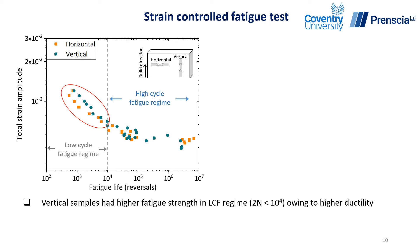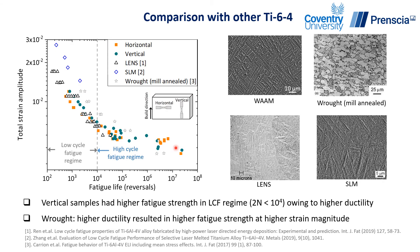This slide presents the total strain amplitude versus fatigue life in reversals for horizontal and vertical samples, with the low cycle fatigue regime and high cycle fatigue regime highlighted. When we compare horizontal and vertical samples, we can observe that the vertical samples show marginally higher fatigue performance when the applied strains are in the low cycle fatigue regime. However, when the applied strains are in the high cycle fatigue regime, we don't see any variation or influence of the anisotropic microstructure on the fatigue performance.